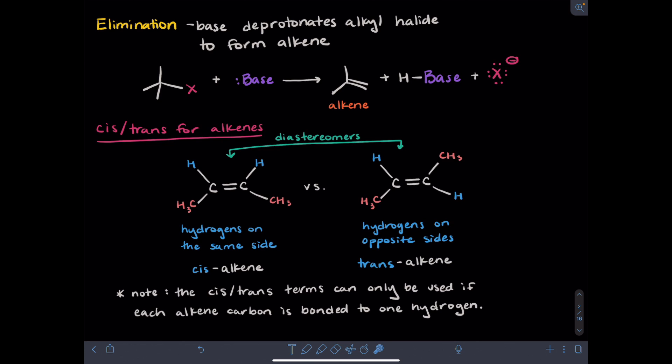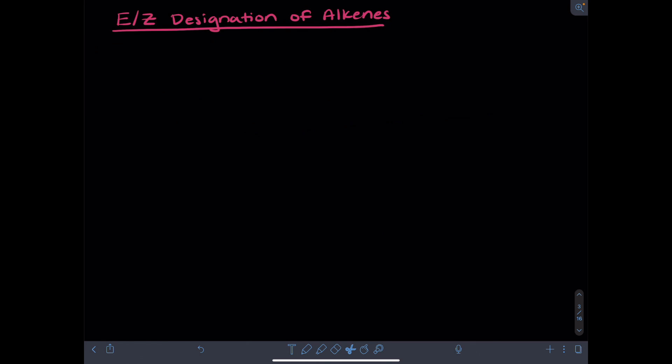A limitation of the terminology cis and trans is that they can only be used if each carbon of the alkene is bonded to one hydrogen. A more rigorous system for describing the stereochemistry of alkenes is known as the E/Z designation.